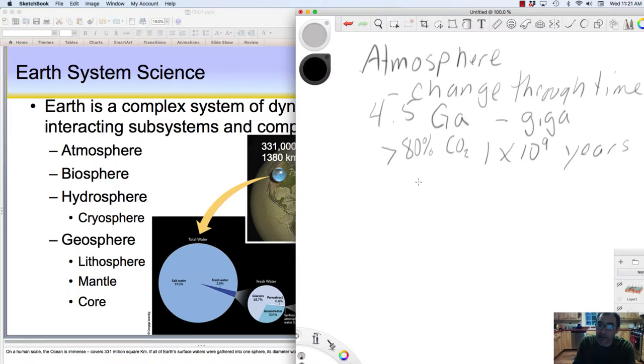But today, if we go to today, our atmosphere—most of our atmosphere, about 78% of it—is nitrogen, nitrogen gas.